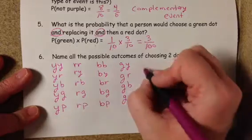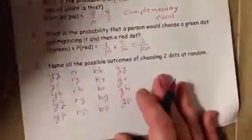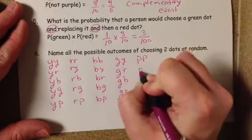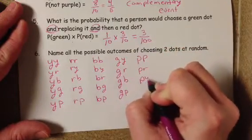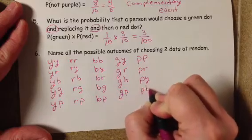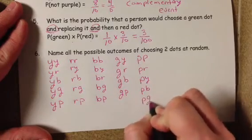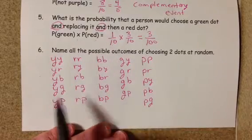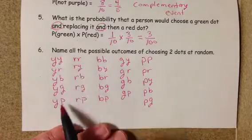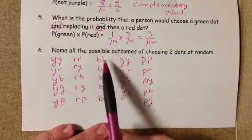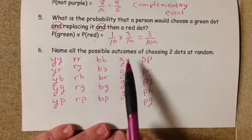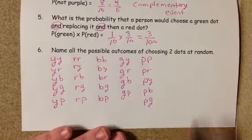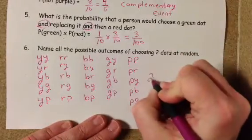We have two purple dots, so we could get purple-purple; purple-red; purple-yellow; purple-blue; or purple-green. That's all the different combinations we could get. Counting them all up, we have 24 different outcomes.